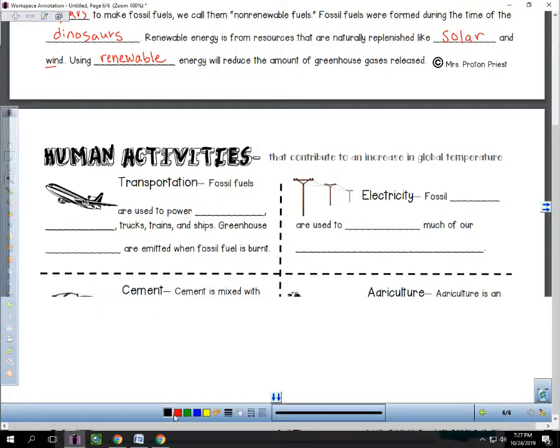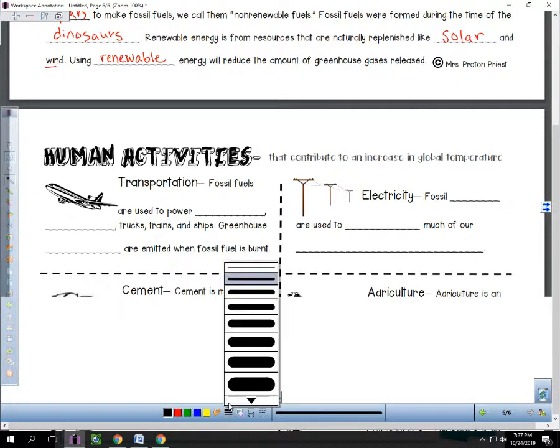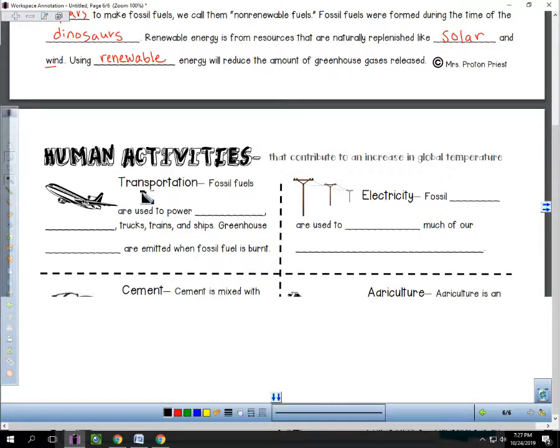Transportation. I think we're all pretty well aware of the fact that transportation is a big one. Fossil fuels are used to power planes, cars, trucks, trains, and ships. Greenhouse gases are emitted when that fossil fuel is burnt.